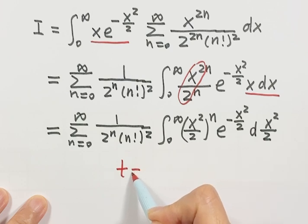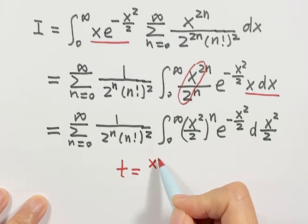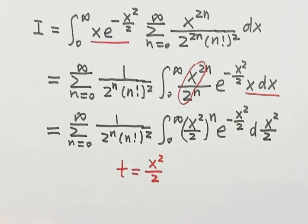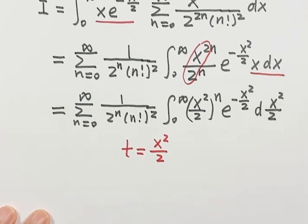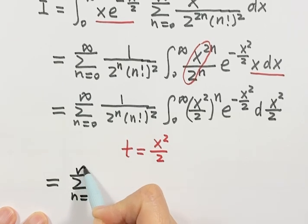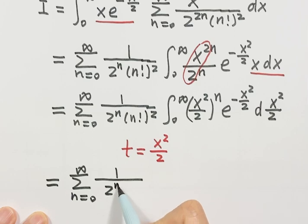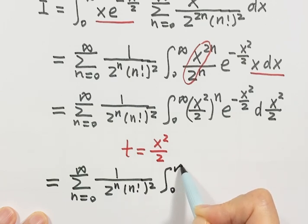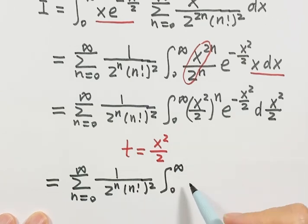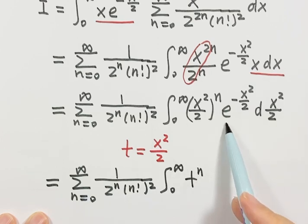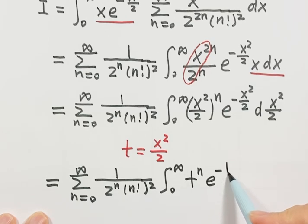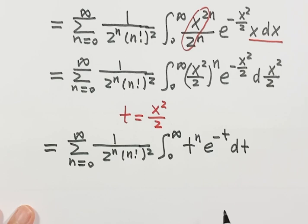We combine these two together to get dx squared over 2. Now we can do the substitution — we use t equals x squared over 2. For the new variable we still have the same lower and upper bounds. After substitution, this is t to the power n, times e to the power negative t, times dt.